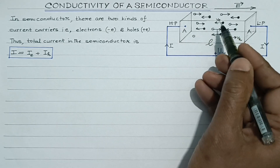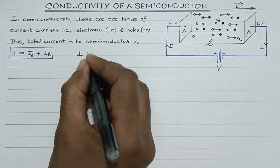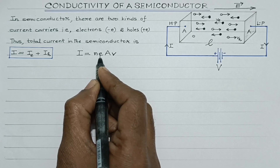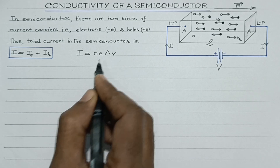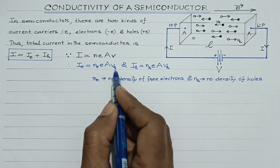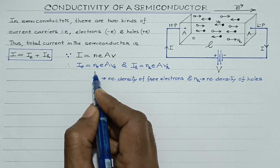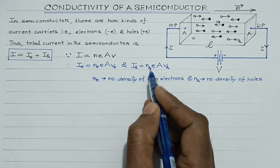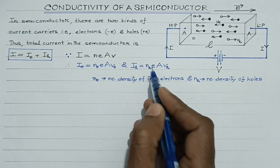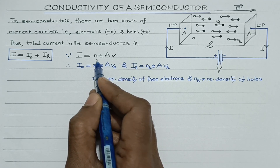Suppose Ne is the number density of electrons and Nh be the number density of holes. Then, we are aware — current electricity mein humne padha tha — the current is given by I = N·e·A·Vd, where N is the number density of charge carriers, e is the charge which it carries, A is the cross-sectional area, and Vd is the drift speed. Magnitude of current due to the flow of electrons is given by Ne·e·A·Ve, where Ve is the drift velocity of the electrons and Ne is the number density of free electrons — number of free electrons per unit volume. Similarly, the magnitude of the current due to the flow of holes is Nh·e·A·Vh, where Vh is the drift speed of the holes and Nh is the number density of holes — total number of holes per unit volume. This formula has already been verified in the unit of current electricity.